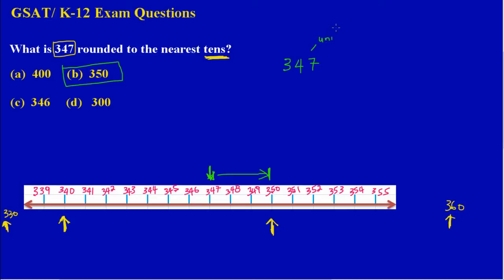You would be focusing on this column, the tens column, since they asked you to round it off to the nearest ten. So you'd be focusing on the tens column, which is the 4.